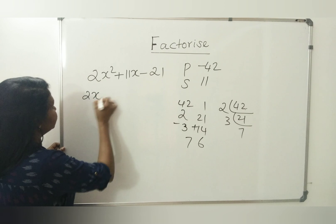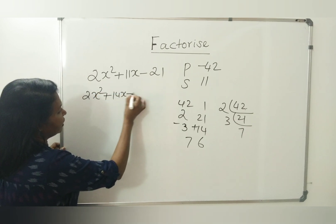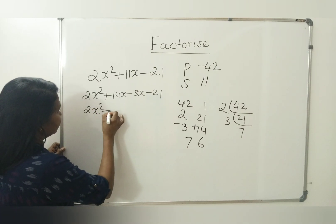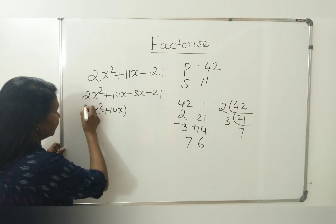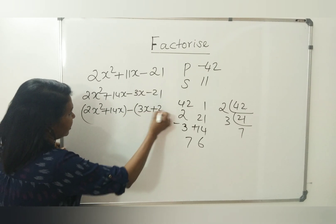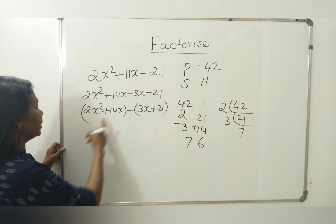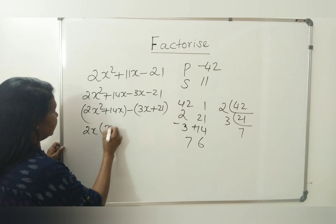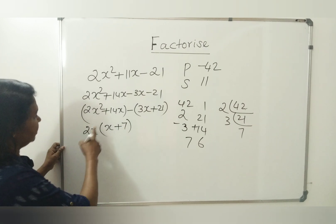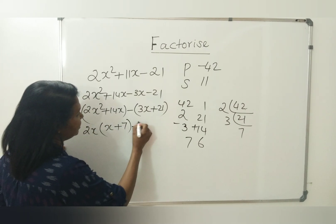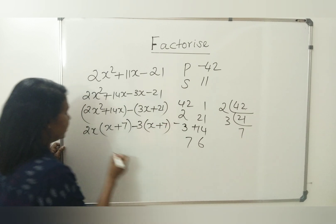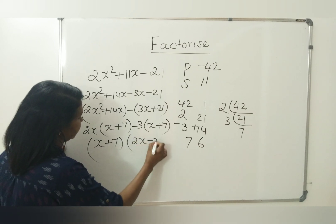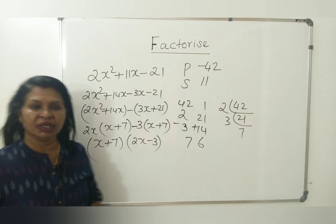So you write: 2x squared plus 14x minus 3x minus 21. Now grouping: 2x is common, giving x plus 7. Then 3 is common, giving x plus 7. So the factors are x plus 7 and 2x minus 3.